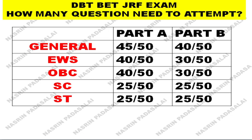To summarize: general candidates should attempt 45 out of 50 questions in Section A and 40 in Part B. EWS and OBC candidates should attempt 40 questions in Section A and 30 questions in Section B out of 50. Please note this down in your preparation notebook so that you stay motivated and it will be an eye-opener in the examination hall.